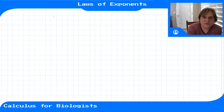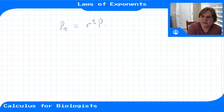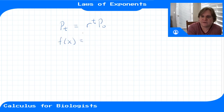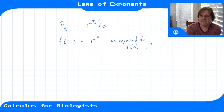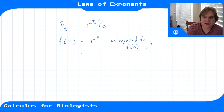Now that we've gotten our solutions, we had our solution in the form of p equals r^t · p₀. Our function has time sitting up in the exponent, so this is an exponential function of the form f(x) = r^x, where x shows up in the exponent, as opposed to something like f(x) = x² where x is raised to some power. When we have these exponents, you might want to remind yourself of some of the laws of how exponents combine, and that's what we'll go over in this short video.